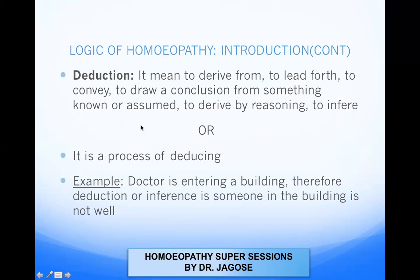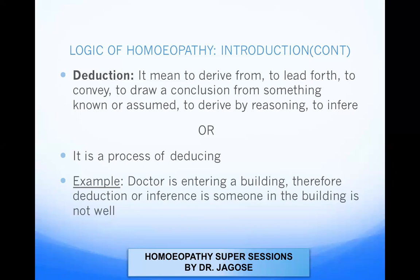For example, a doctor is entering a building. You are going to draw a conclusion from something known or assumed. You know that somebody comes in a car, enters the building — he is in a white coat and has a stethoscope around his neck. So the conclusion you draw is that he's a doctor, and since a doctor is coming into the building, someone in the building is not well. So you have drawn a conclusion from what was known to you.